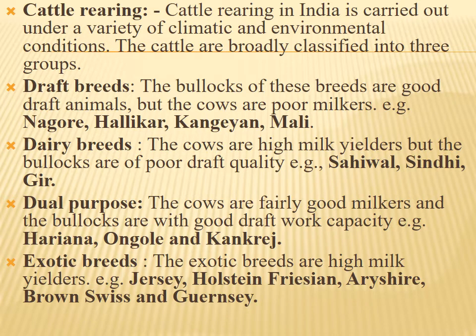Cattle rearing in India is carried out under a variety of climatic and environmental conditions. Cattle are broadly classified into three groups. Draft breeds: the bullocks of these breeds are good draft animals but the cows are poor milkers — examples include Nagori, Hallikar, and Kangayan.